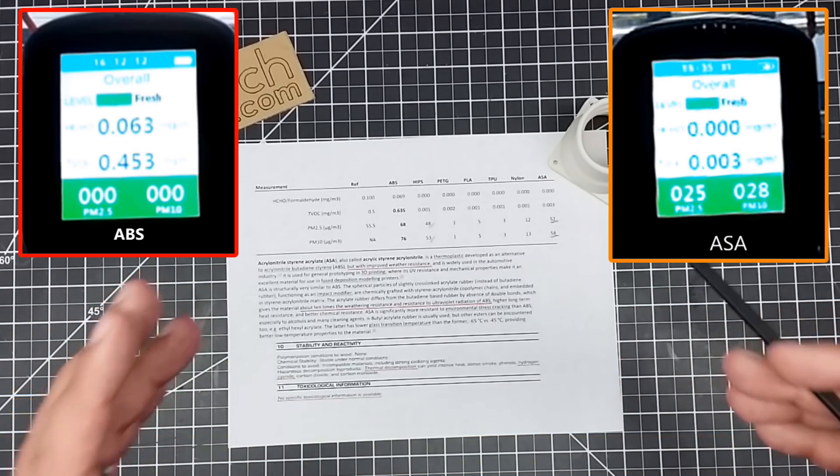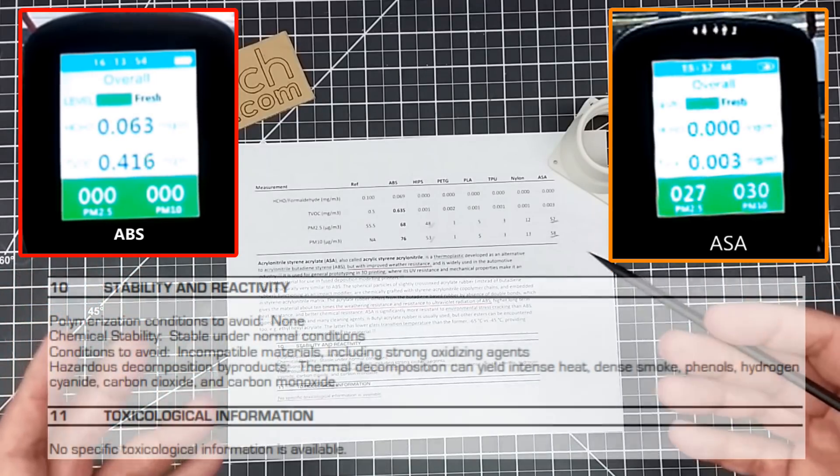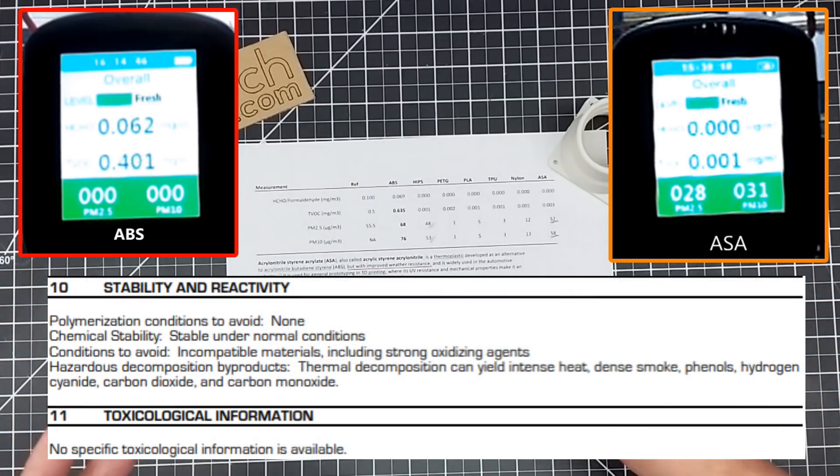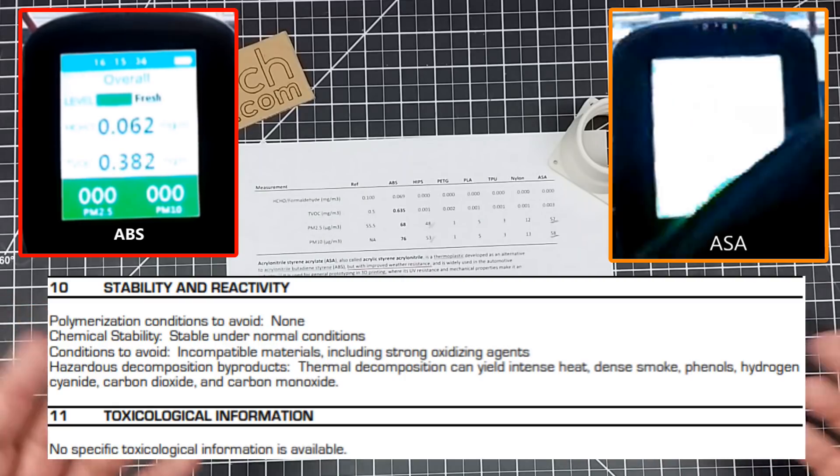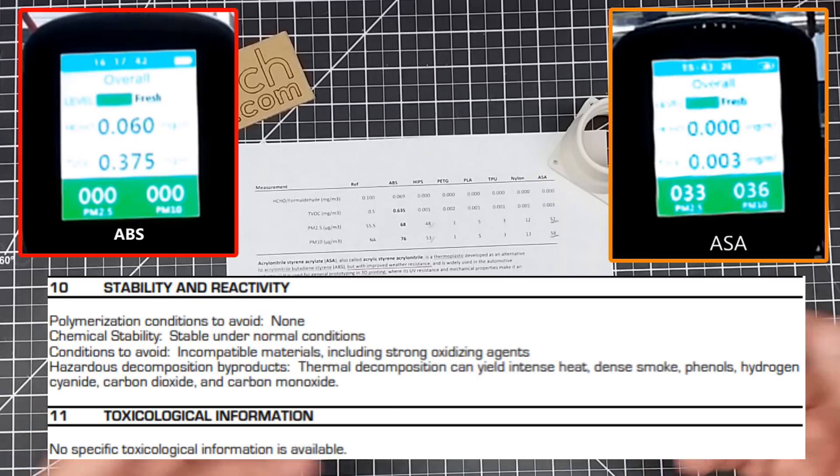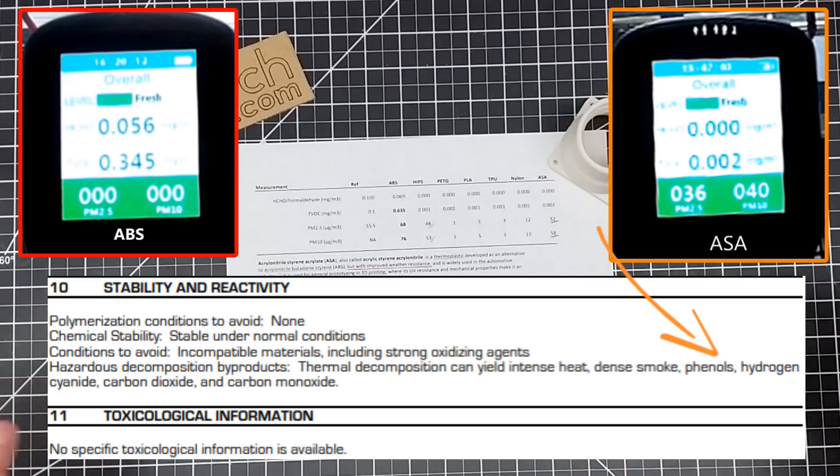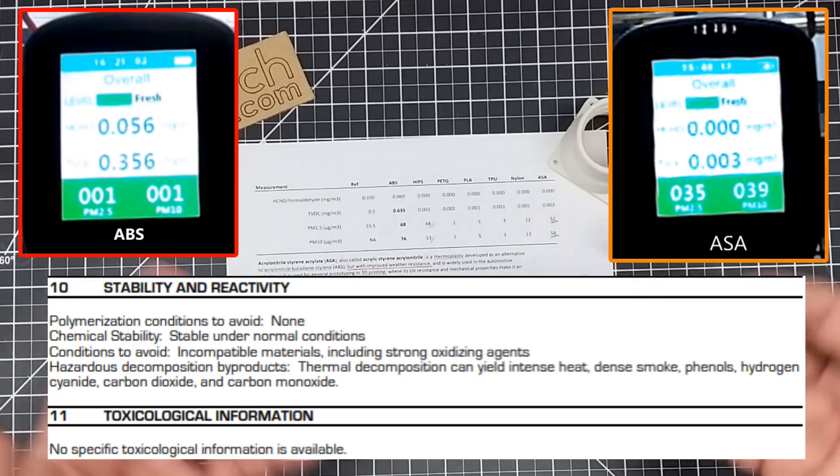The other thing I went and did is I looked at the MSDS sheet, or the SDS sheet, I think as they're now called, and for thermal decomposition, i.e. if this burns, I was very interested to see kind of, there's not a lot of stuff. So you have some phenyls, you have hydrogen cyanide, carbon dioxide, carbon monoxide, pretty much stuff I would expect.